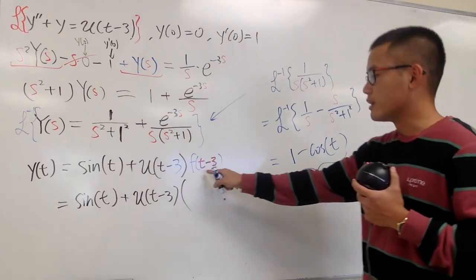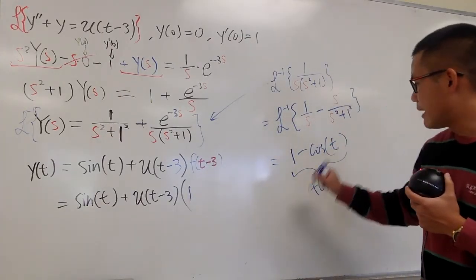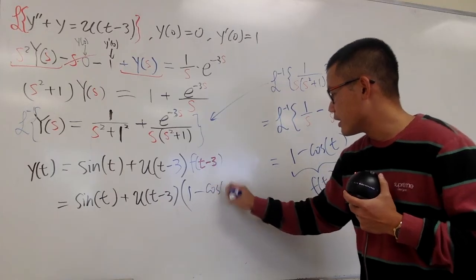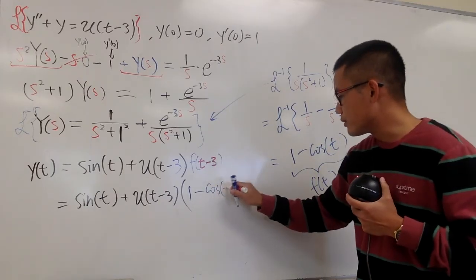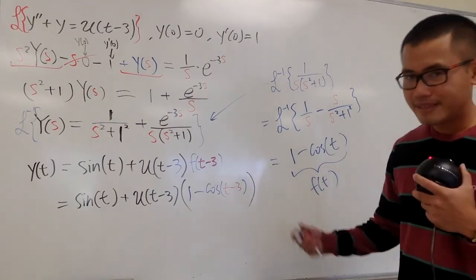Okay, 1, and then, minus cosine, and the t becomes t minus 3, so put on t minus 3 inside, and then, close that parentheses. That's it. This right here is the solution, and this is my little letter y, but anyway, it shouldn't matter that much.